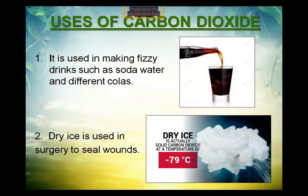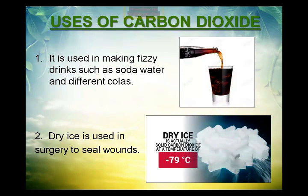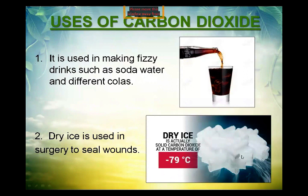Dry ice is used in surgery to seal wounds. Solid carbon dioxide is called dry ice and is formed at minus 79 degrees centigrade. It is white in colour and is used for cooling. When dry ice is heated, it does not melt but directly converts into gas — a process called sublimation.